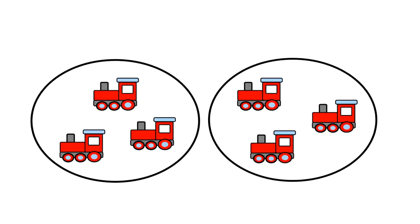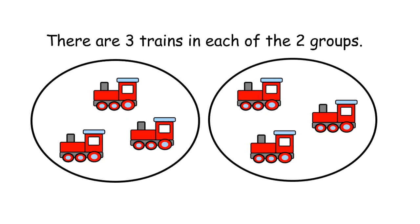Examine these two groups. On the left there are three train cars and on the right there are three train cars. These are equal groups. There are two equal groups. There are three trains in each of the two groups.